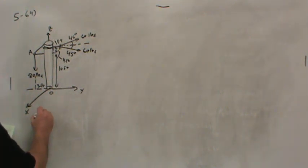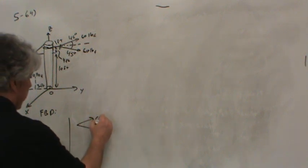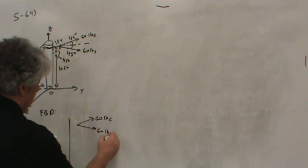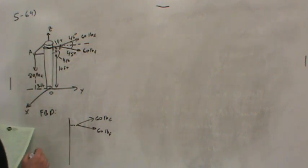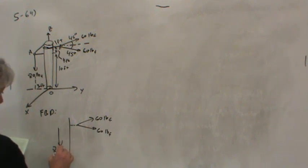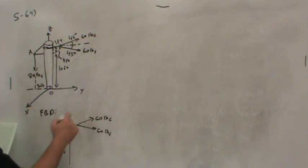So let's make a free body diagram of the pole. Essentially there are two forces, 60-pound forces, out away from the body, and an 80-pound force, out away from the body. You know, it's three foot there, one foot there.